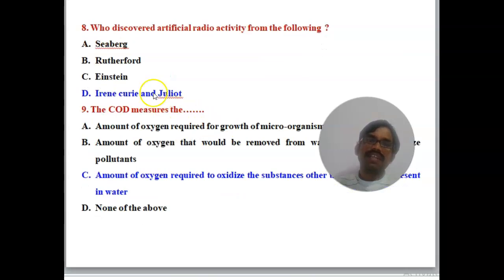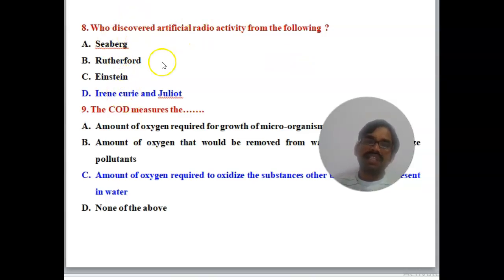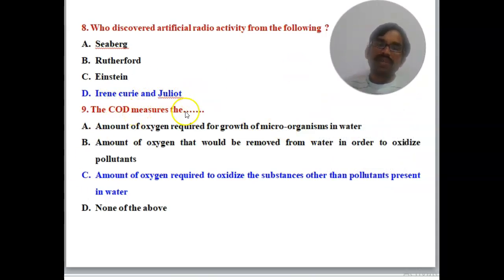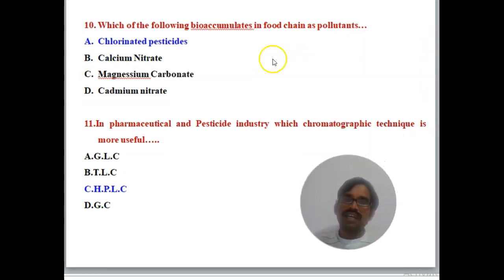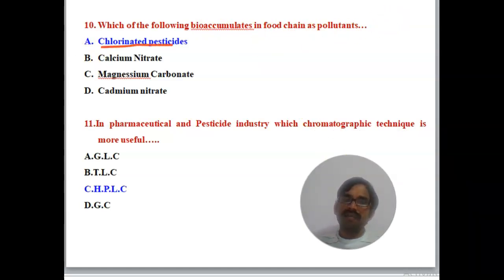Question 8: Who discovered artificial radioactivity? The right answer is Irène Curie and Frédéric Joliot. Question 9: COD measures — the right answer is the amount of oxygen required for the oxidation of substances and pollutants present in water. Question 10: Which of the following bioaccumulates in the food chain as a pollutant? The right answer is fluorinated pesticides.